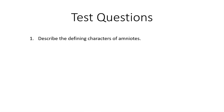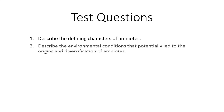We're going to have a couple of test questions you'll be required to know. The first one: I want you to get out of this the defining characteristics of amniotes — what makes them unique, what makes them different than amphibians and fish. And the other thing is to describe the environmental conditions that potentially led to the origins and diversification of the amniotes. We'll talk about the Carboniferous a little bit. But the main thing is to get out of this the characteristics of amniotes, and also come to realize they're really diverse.